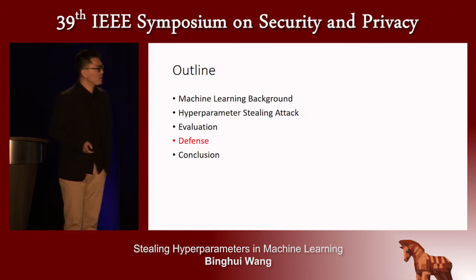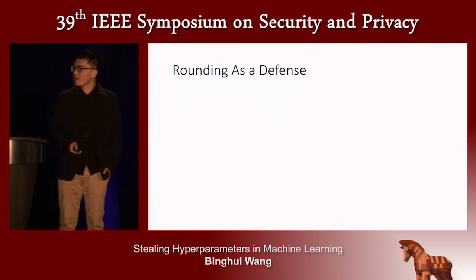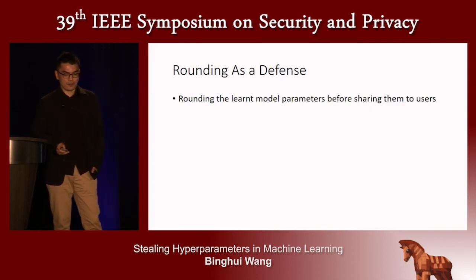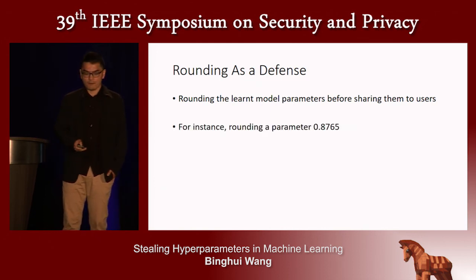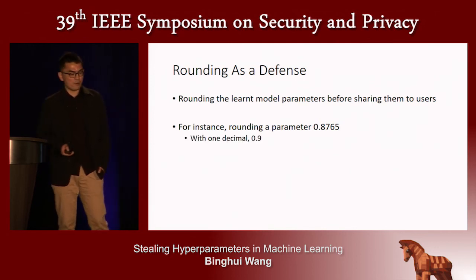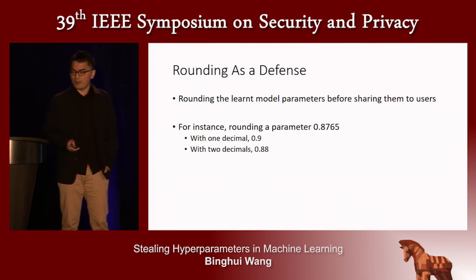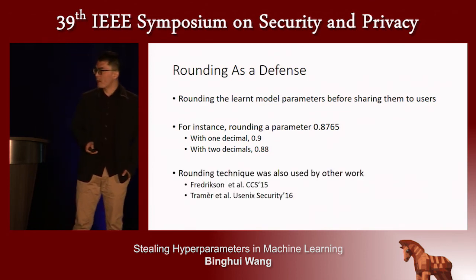Now we show the defense. We use rounding as a defense: we round the learned model parameters before sharing them with the user. For instance, rounding a parameter at 0.765 to one decimal gives 0.9, and to two decimals gives 0.88. This rounding technique was also used by other prior work.